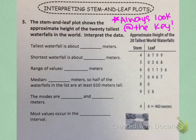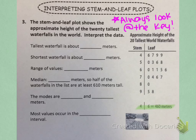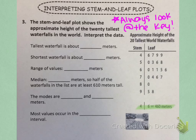Number 3 says the stem and leaf plot shows the approximate height of the 20 tallest waterfalls in the world. The first thing I'm going to look for is the key. It says that the stem on the left side is 4, the leaf on the right side is 6, and that means 460 meters. So the stem is the hundreds place and the leaf is the tens place.